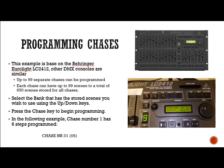Programming chases. We're going to use a Behringer Eurolite LC2412. Other DMX consoles are going to be similar. In our Behringer, we can have up to 99 separate chases programmed. Each chase can have up to 99 scenes, and a total of 650 scenes stored for all chases. So it's quite versatile.